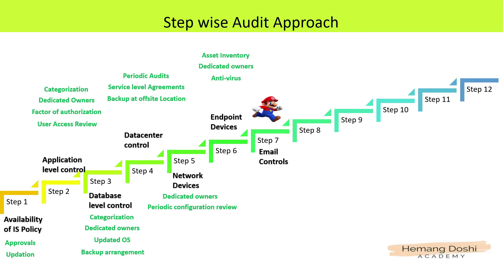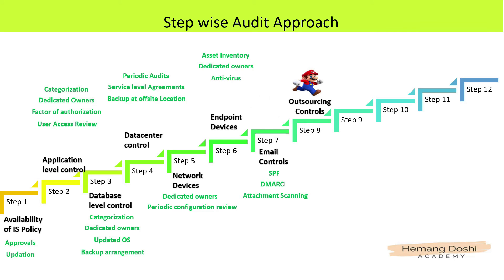Step 7 is about auditing the controls related to email. As an auditor, you need to check whether a sender policy framework is enabled. Don't worry about technical terms — we will simplify these while discussing Step 7. Step 8 is about auditing the controls related to outsourcing. You need to check the availability of a service level agreement and the inclusion of appropriate clauses in the SLA, and whether the SLA with the service provider is audited at periodic intervals.